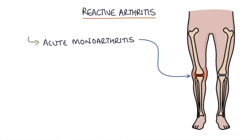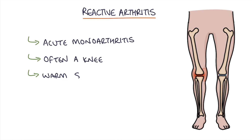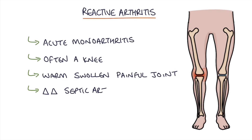Often this is a single joint in the lower limb, most often the knee, and it presents with a warm, swollen and painful joint. The obvious differential diagnosis is septic arthritis, which involves infection in the joint, but in reactive arthritis there's no joint infection.